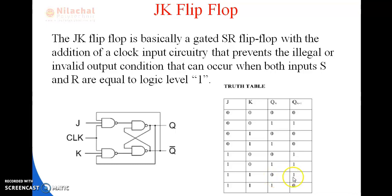For example, if Qn is 0, then Qn+1 is 1, since 1 is the complement of 0. Similarly, if Qn value is 1 then Qn+1 value is 0, because it is the complement of 1.